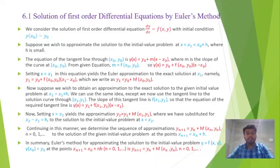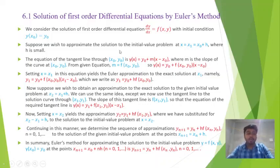How to solve a first order differential equation by Euler's method? We consider the solution of the first order differential equation dy/dx = f(x, y) with initial condition y(x₀) = y₀. Suppose we wish to approximate this solution at x = x₁ = x₀ + h, where h is small. The equation of the tangent line through (x₀, y₀) is y(x) = y₀ + m(x − x₀), where m is the slope of the curve at (x₀, y₀). From the given equation we get m = f(x₀, y₀).